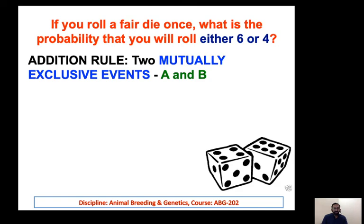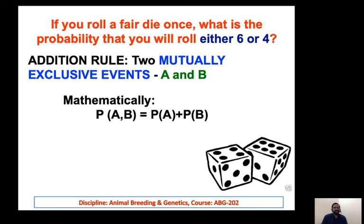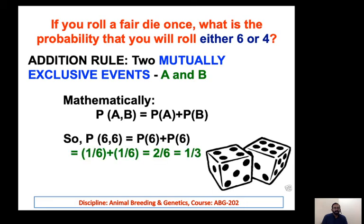For example, if you roll a fair die once, what is the probability that you will roll either a six or a four? You can see the key words 'either' and 'or' — that means mutually exclusive, and we apply the addition rule. These are mutually exclusive events A and B, so P(A or B) = P(A) + P(B). The probability of six is one over six, and the probability of four is one over six, so one over six plus one over six equals two over six, which is one over three.